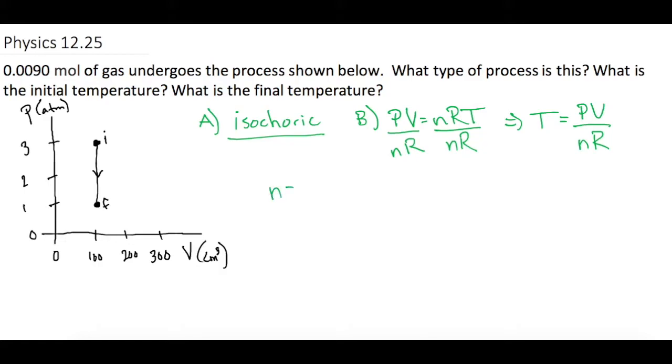Okay, now if we make a list of what we have, we know that n is 0.009 moles of some gas. And they tell us that from the graph, the initial volume and the final volume are both 100 cubic centimeters. If we move the decimal place over 6, that gives us 0.0001 cubic meters. Okay, now from the graph, we can tell that the initial pressure is equal to 3 atm, and the final pressure is equal to 1 atm.